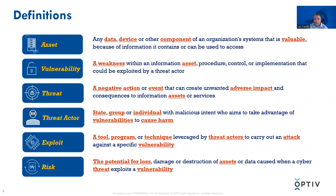In the car example, a vulnerability could be the fact that I left my doors unlocked. A threat is a negative action or event that can create unwanted adverse impacts and consequences to information assets or services — for example, my car or its contents being stolen. A threat actor is a state, group, or individual with malicious intent who aims to take advantage of vulnerabilities to cause harm — like a thief who has been casing my car since I parked it.